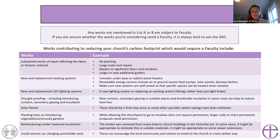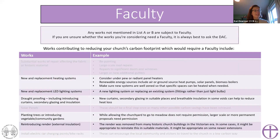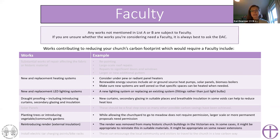Anything that doesn't appear on List A or List B requires a full faculty — if you're not sure, always ask your DAC or archdeacon. Larger-scale work such as renewing the heating or lighting system completely, moving light fittings, draft proofing including secondary glazing, or insulation in voids would all require a full faculty. In your churchyard, while you can move to meadow grasses and wildflowers without permission, planting trees or introducing a community garden as a larger-scale project would need permission.